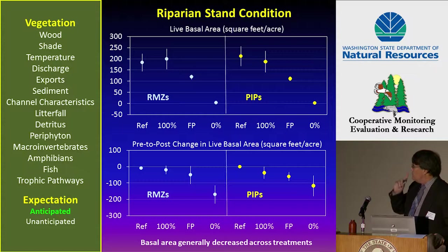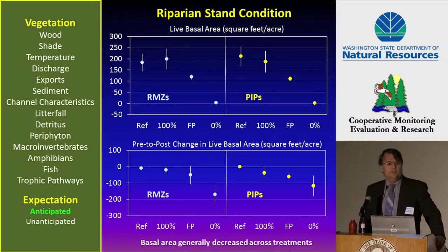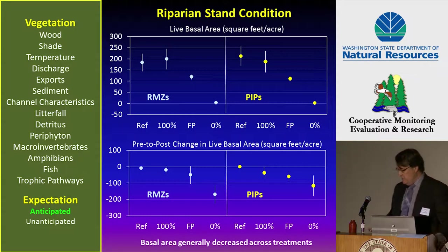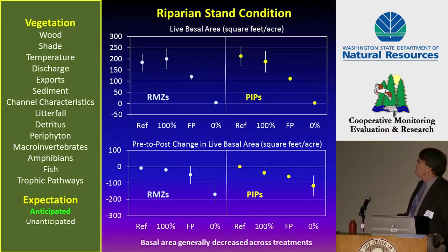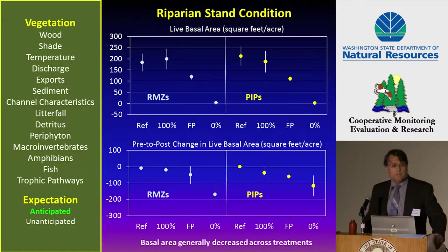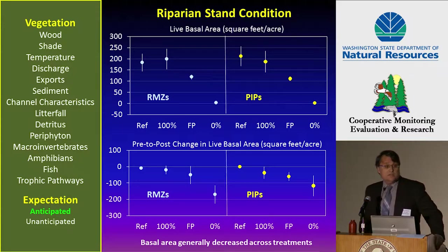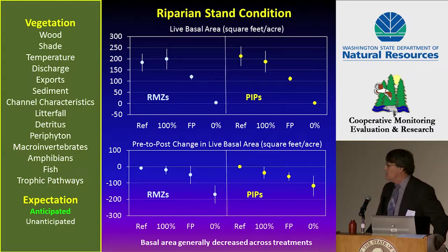The second vegetation variable is riparian stand condition, which was measured in context of two different subvariables: live basal area and the change in live basal area. Live basal area is on top and change in live basal area is on the bottom. The basal area, or change in live basal area, was basically the opposite pattern to mortality — it decreased, as one might expect, with increasing treatment intensity.